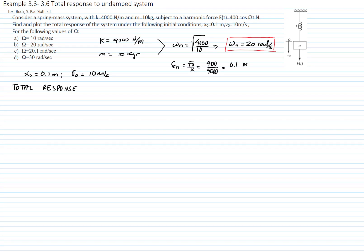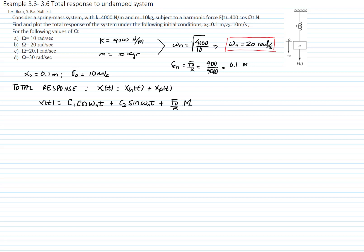The total response of the system is the homogeneous response plus the particular response. The homogeneous response is due to the initial conditions, and the particular response is due to the external force applied. Since this is an undamped system, the homogeneous response is C1·cos(ωₙt) + C2·sin(ωₙt), and the particular response is the static deflection times the amplification factor times cos(ωt).